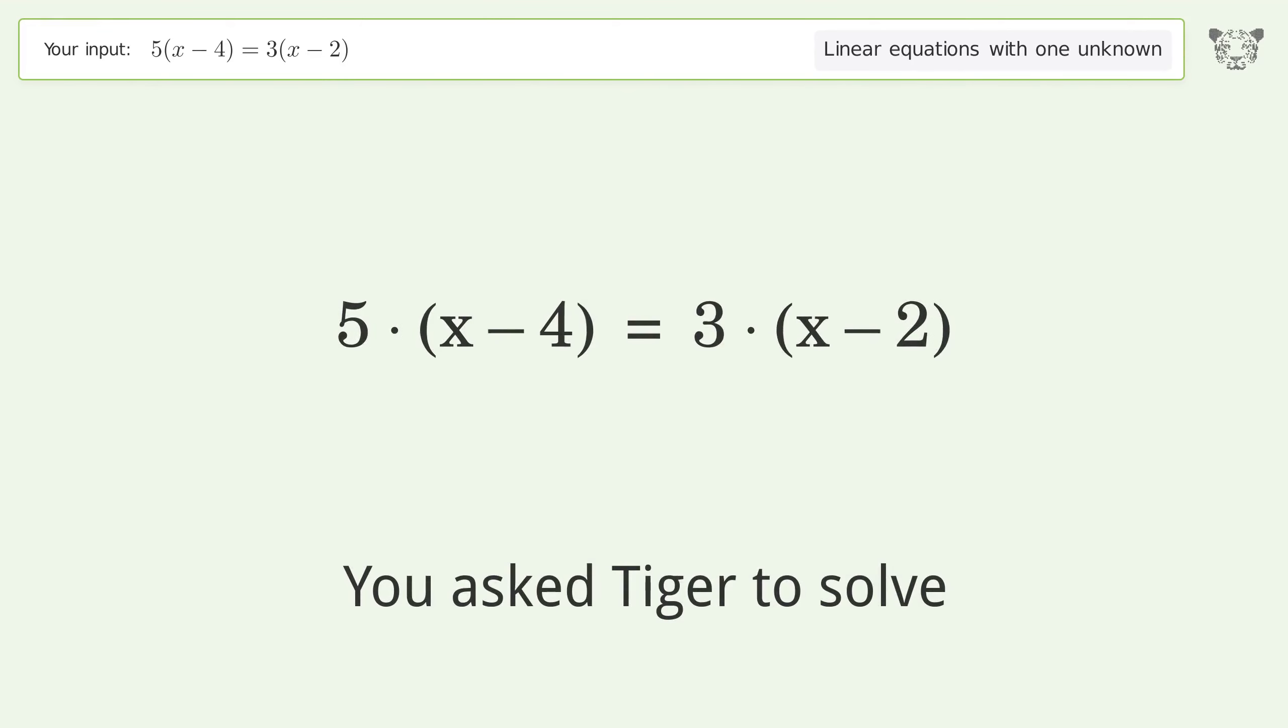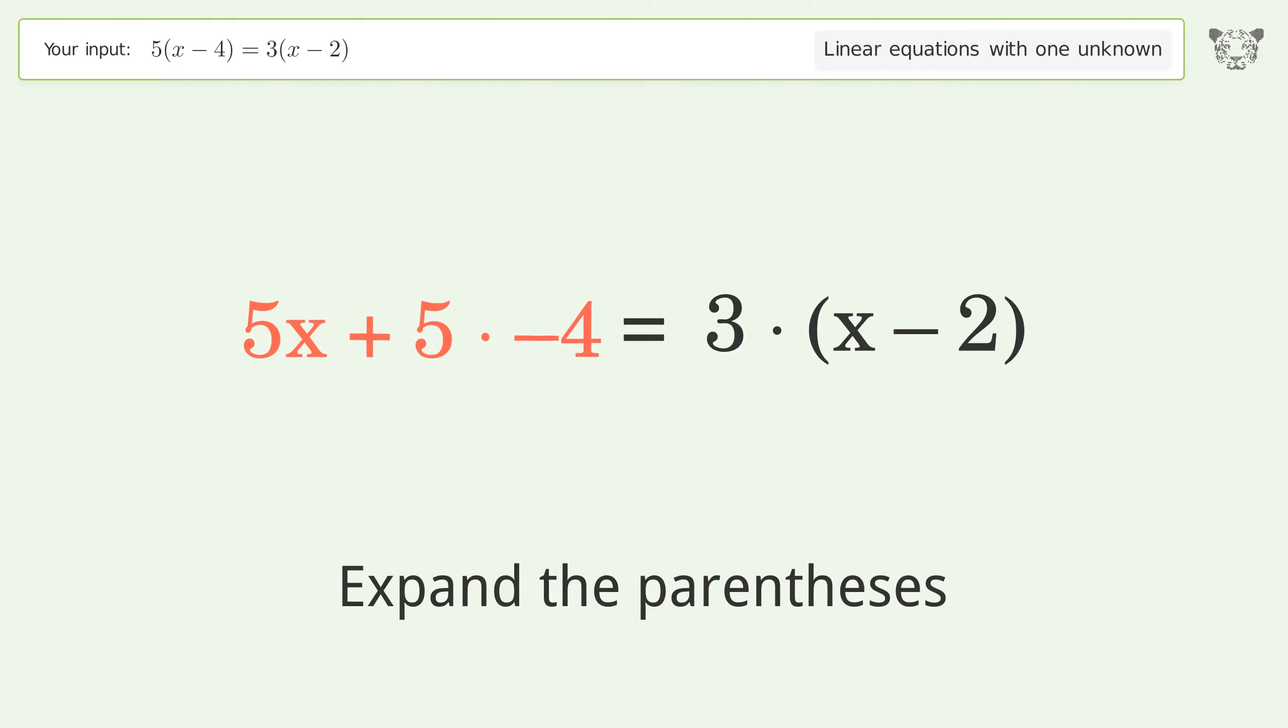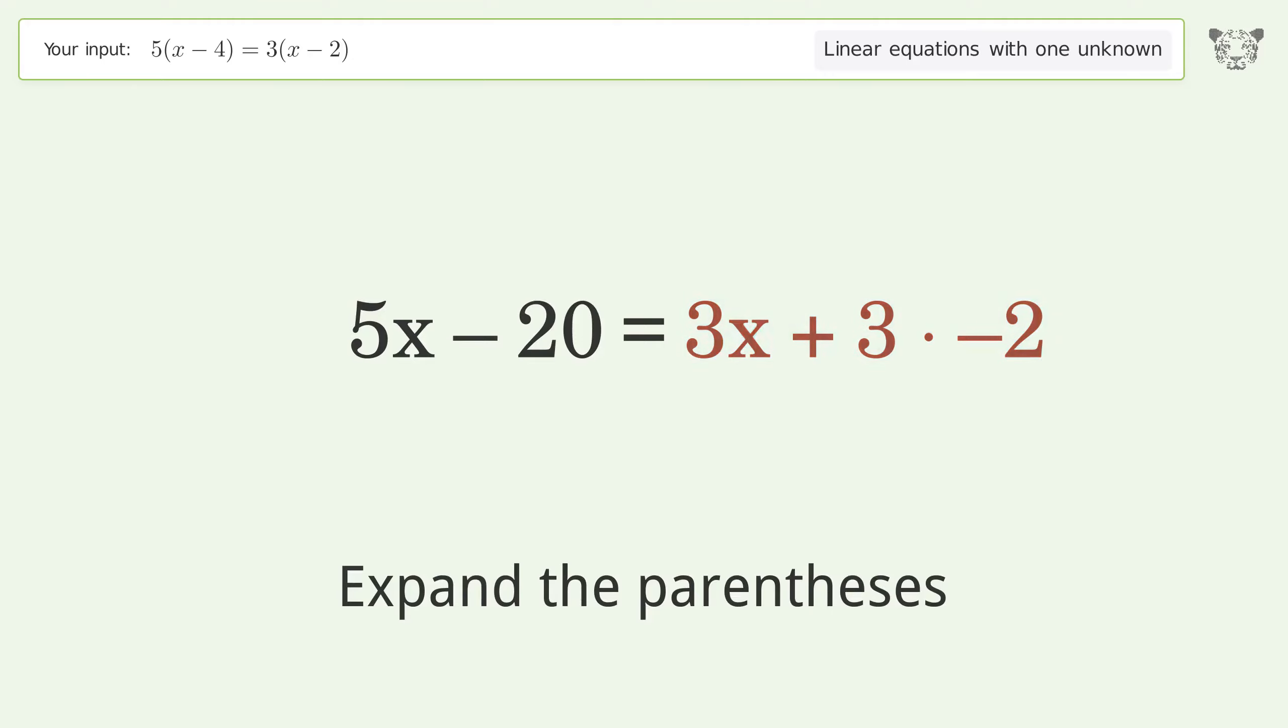You asked Tiger to solve this. This deals with linear equations with one unknown. The final result is x equals 7. Let's solve it step by step. Simplify the expression, expand the parentheses, simplify the arithmetic, expand the parentheses, simplify the arithmetic.